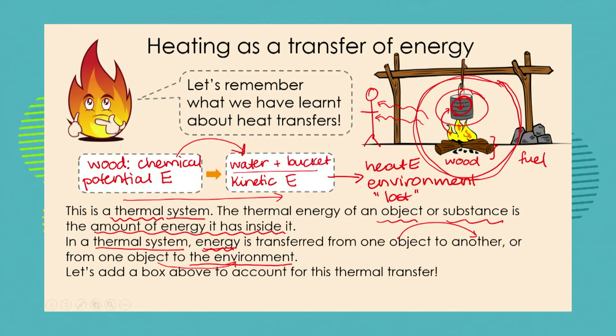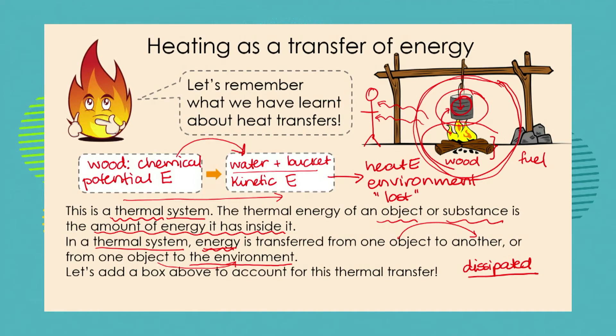We often say that energy lost to the environment is dissipated — it is lost or spread into the environment. Remember, according to the law of conservation of energy, we cannot destroy energy. So we are not destroying it; it's just being transferred into a form which we cannot use. The purpose of the heat energy was to boil the water. The energy lost to the environment is not serving the purpose of the original energy transfer, which is why we say it is dissipated or lost, but definitely not destroyed.